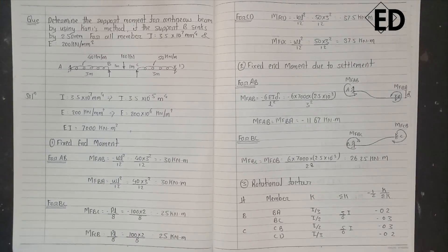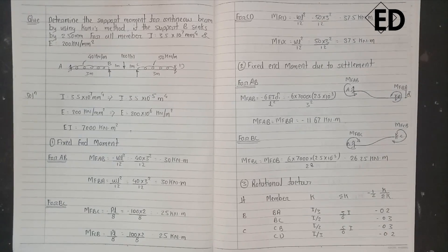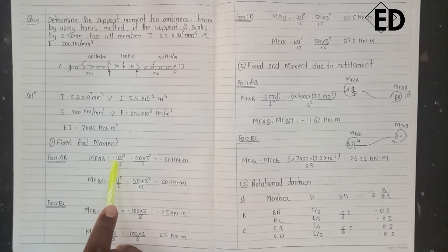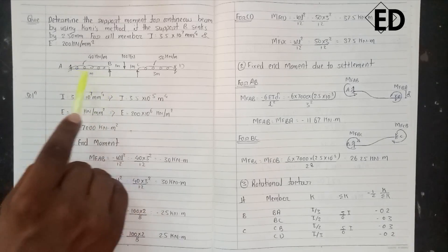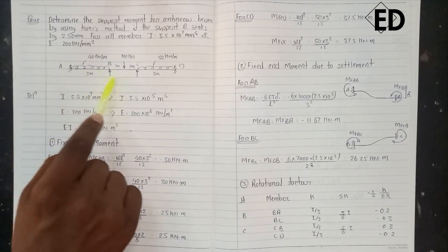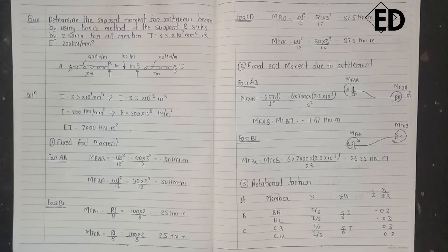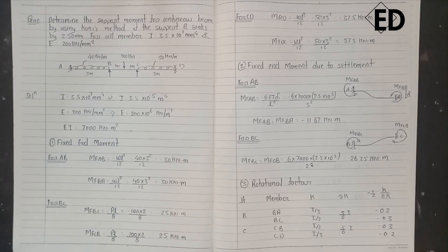As from our last video we know that the fixed end moment is the first step for solving Kani's method. For span AB, the fixed end moment from A to B is minus WL²/12, and from B to A is WL²/12. So we get minus 30 kN·m and the fixed end moment from B to A is 30 kN·m.